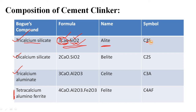Similarly, dicalcium silicate (C2S) has the same structure but instead of three calcium oxide components it has only two. It is known as belite. Similarly, tricalcium aluminate (C3A) and the fourth compound is celite. Next we will see the actual functions of all these Bogue's compounds — what role they play within the cement — which is our major topic going forward.